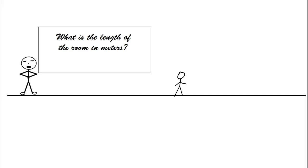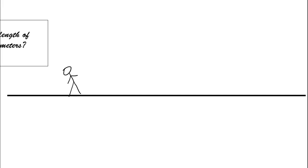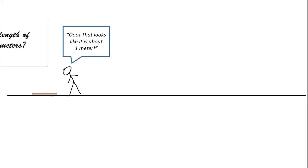Let's say we're in a science classroom and the teacher poses a problem on the whiteboard: what is the length of the room in meters? It's kind of a simple lab or quick activity. They call on a student who looks like they're not paying attention. The student is confused because they weren't paying attention and didn't hear where the meter sticks are. They look around but can't find the meter sticks, but they see a stick on the floor. In their mind, they think it looks like it's about one meter.